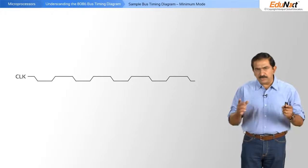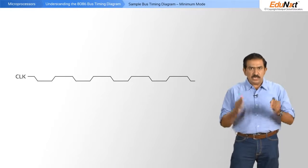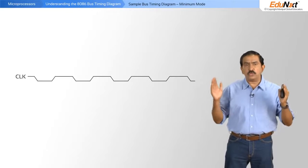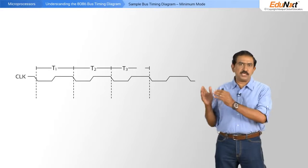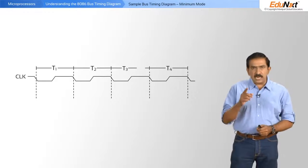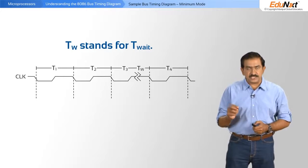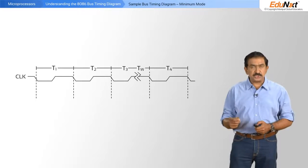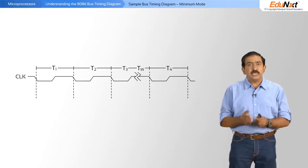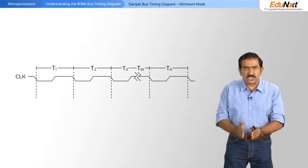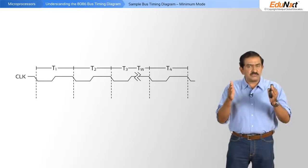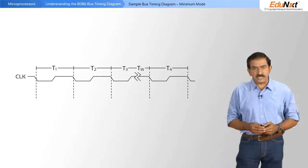So let's now look at a sample bus timing diagram of the 8086 operating in the minimum mode. This is your clock signal. Typically for the 8086, every instruction runs across four clock signals: T1, T2, T3 and T4. In addition you will notice something called TW, which stands for T wait. In certain operations when the peripheral device is slow, it will automatically introduce a wait state such that the processor is forced to wait till the peripheral device becomes ready.